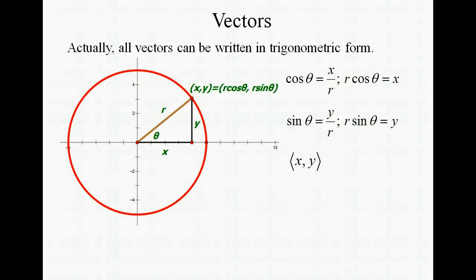Looking at our sine, it's going to be the opposite over the hypotenuse. So we have y over r, and isolating y, we get r sine θ. So whenever you have a vector that's given as the coordinates (x,y), you can rewrite it as (r cosine θ, r sine θ), or you can write it in linear combination form as r cosine θ i + r sine θ j.